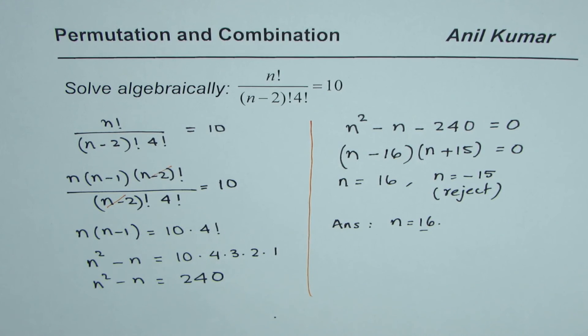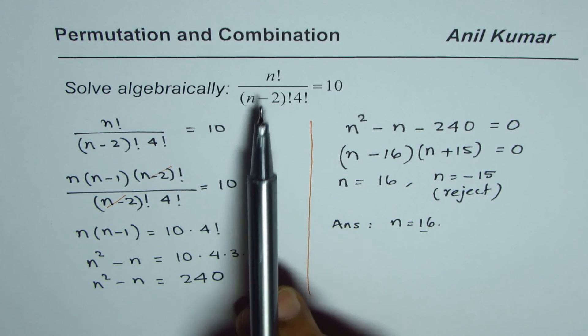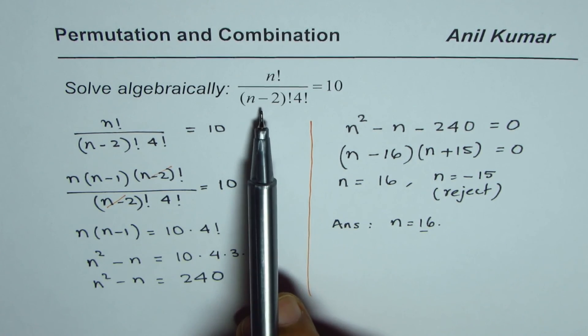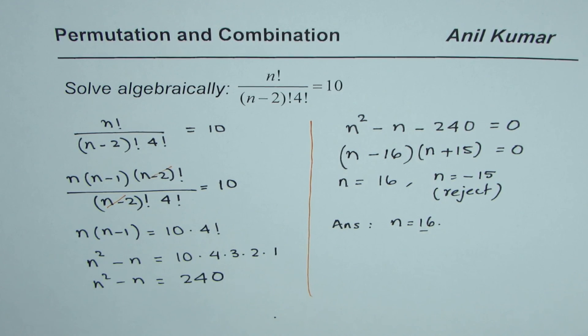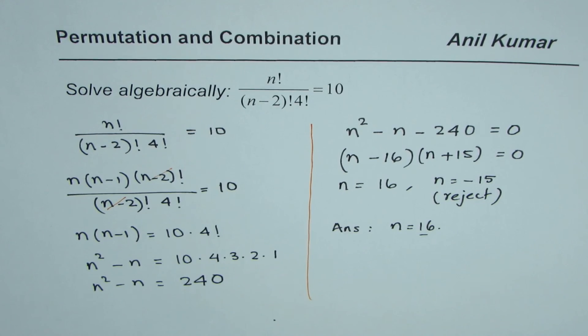I hope you understand now how to solve such factorial involving equations algebraically. The idea is to cancel out one of the factorials and then simplify using the normal rules. I'm Anil Kumar and I hope it helps you to understand the concept. Thank you and all the best.